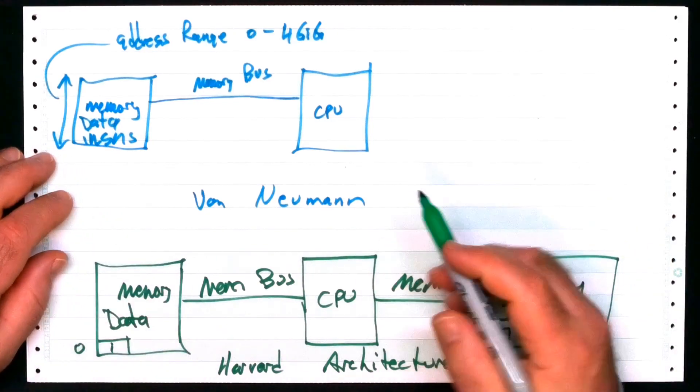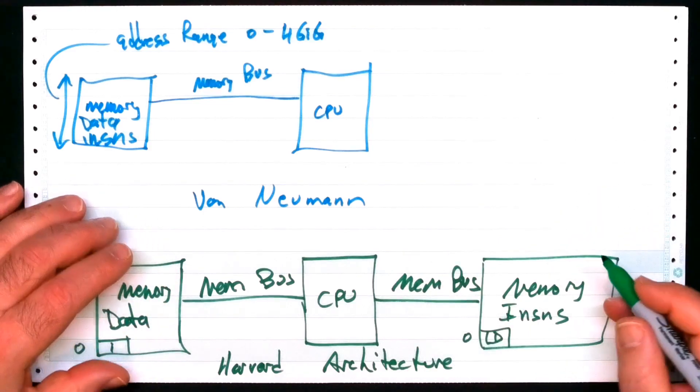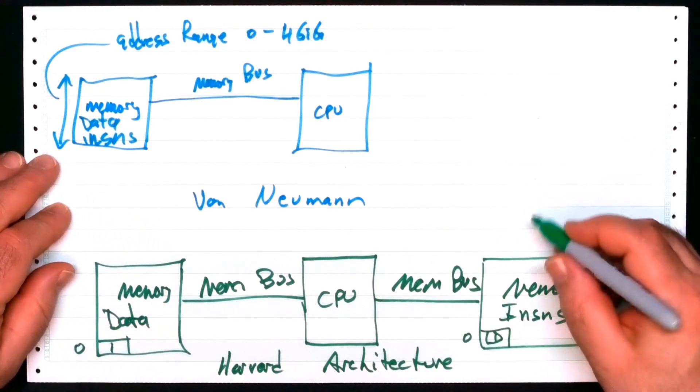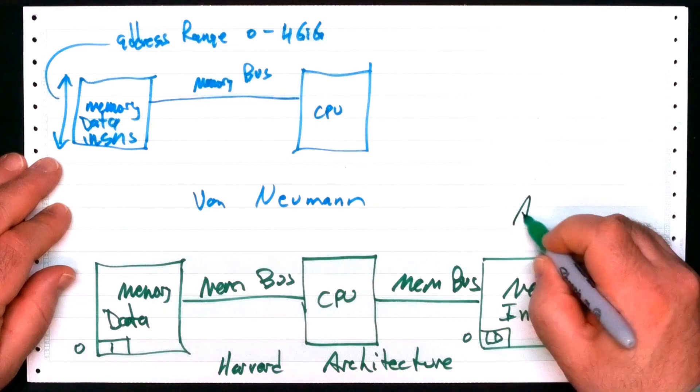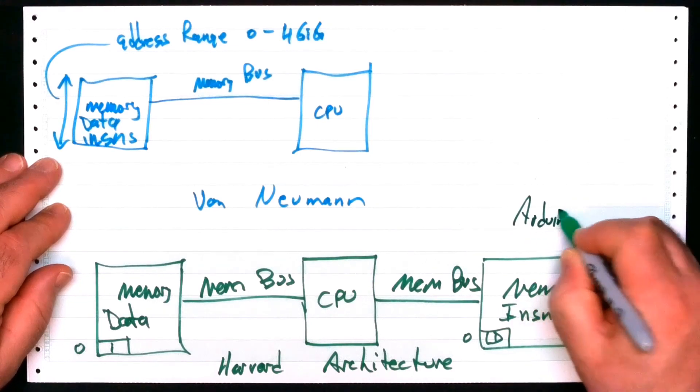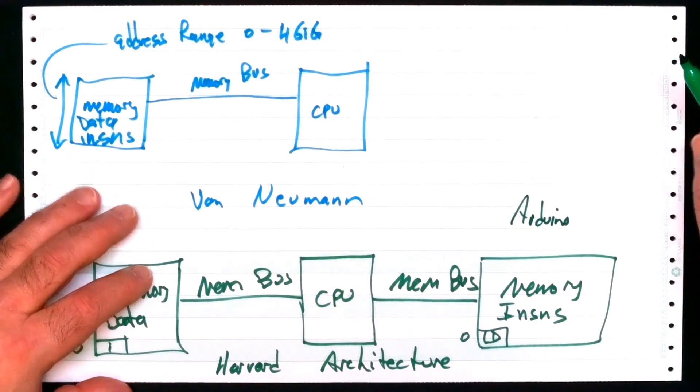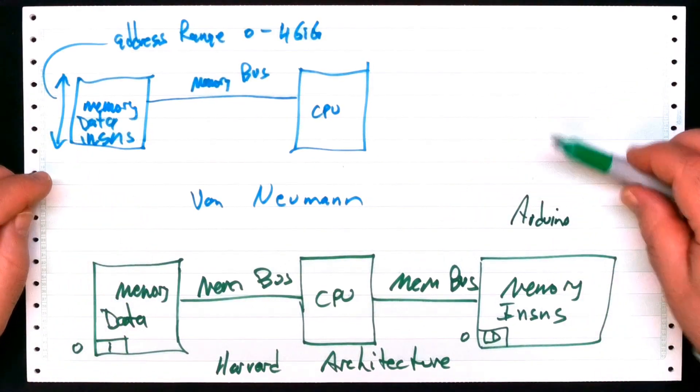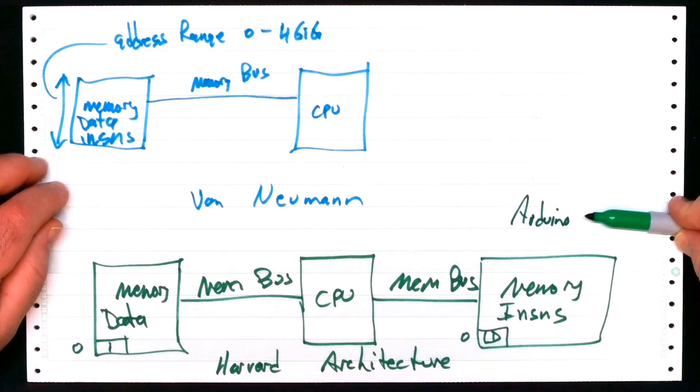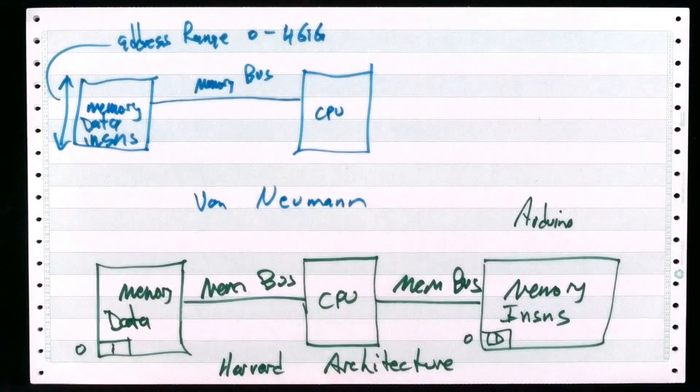And there are some kind of hybrids and things get blurry, but if you actually look at the assembly language of an Arduino program, you have to tell it which is which. So let's wrap this up with a couple of observations here.